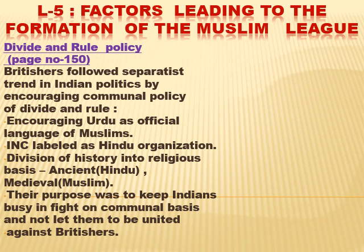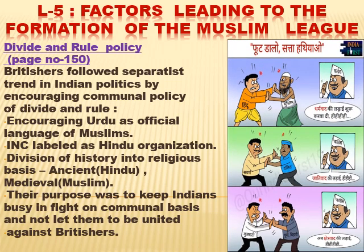The Muslims were backward, so the Britishers told them: you are backward, the Hindus are not doing anything for you. You should have separate educational institutions, separate legislative assembly seats, and a separate organization. They filled the high-class Indian Muslims with this idea, which led to the Muslim League. There is a cartoon depicting two people — a Hindu and a Muslim — fighting while a third person takes the benefit. Even today during elections, leaders take advantage of religion and caste divisions, just as the Britishers knew that dividing Indians would prevent another 1857-style united uprising.